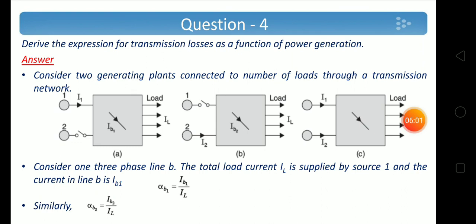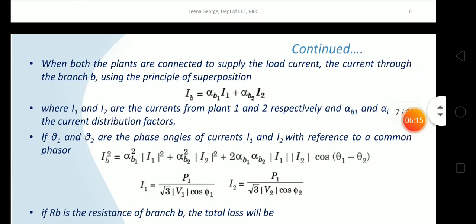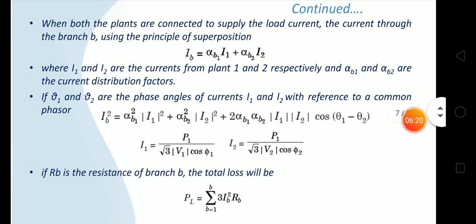Similarly, in the second case alpha_B2 = I_B2/I_L. And in the third case, both generators are supplying, so I_B = alpha_B1·I1 + alpha_B2·I2 by superposition, where I1 and I2 are the currents from plant 1 and 2. If theta_1 and theta_2 are the phase angles of I1 and I2, then I_B² = alpha_B1²·I1² + alpha_B2²·I2² + 2·alpha_B1·alpha_B2·I1·I2·cos(theta_1 - theta_2), using the vector sum formula A² + B² + 2AB·cos(theta).